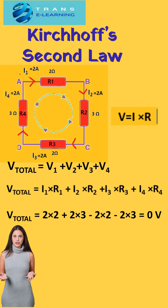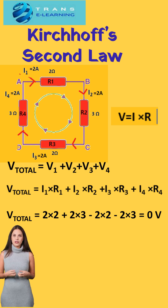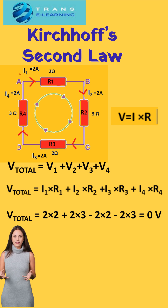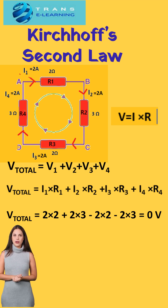Let us understand this with the help of an example. This circuit shows the voltage across the loop. As per Ohm's law, voltage is equal to the product of current and resistance across the circuit. Thus the total voltage will be equal to the sum of all the voltages. On substituting the values of current 1, current 2, current 3, and current 4,